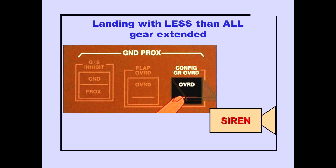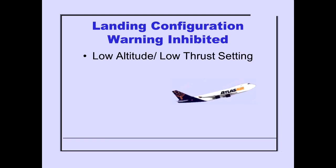If the airplane must land with less than all gear extended, pushing the ground proximity configuration gear override switch inhibits the warning siren. The landing configuration warning is also inhibited automatically on takeoff from gear retraction until 140 seconds elapsed time, or 800 feet, whichever occurs first.